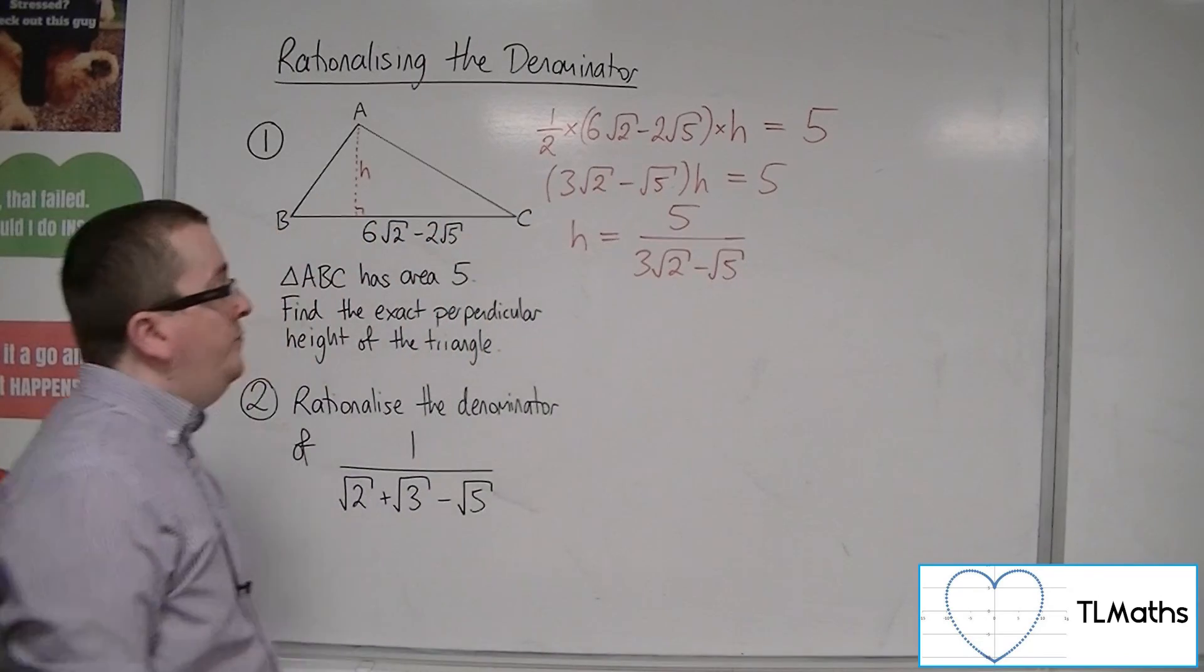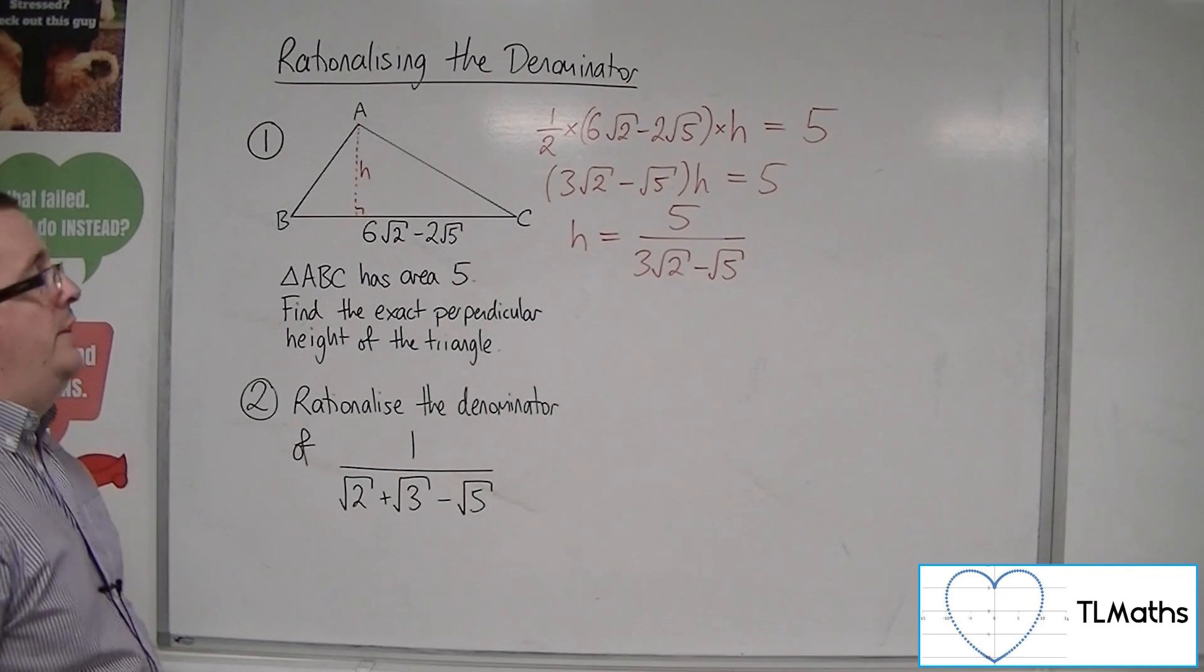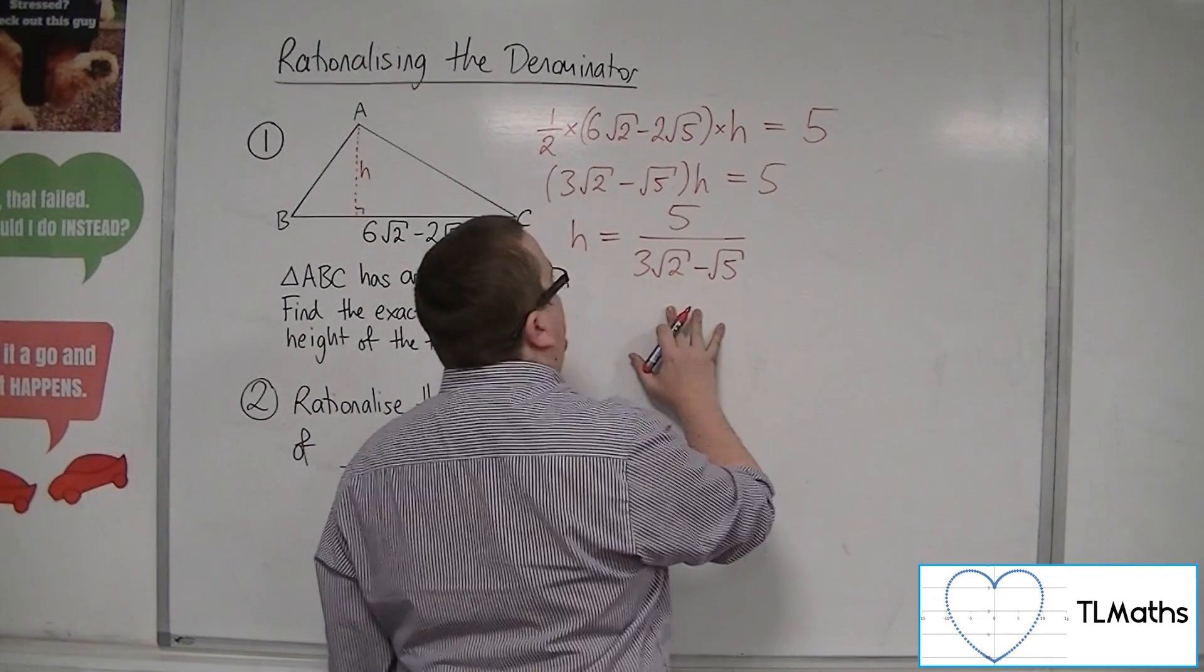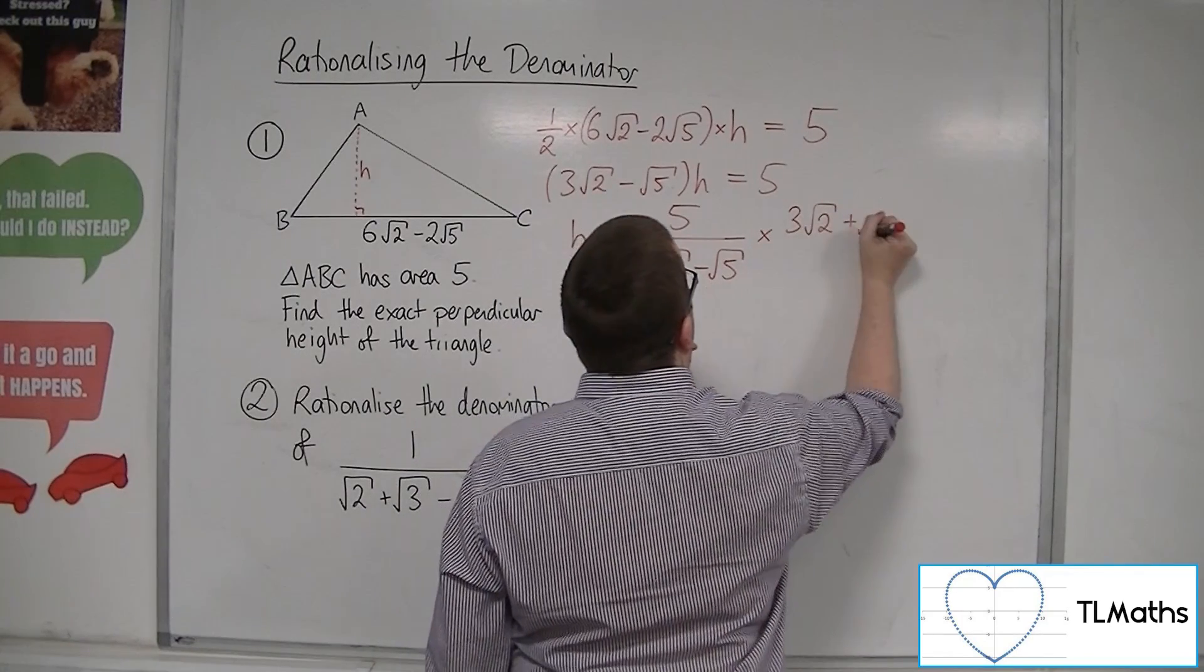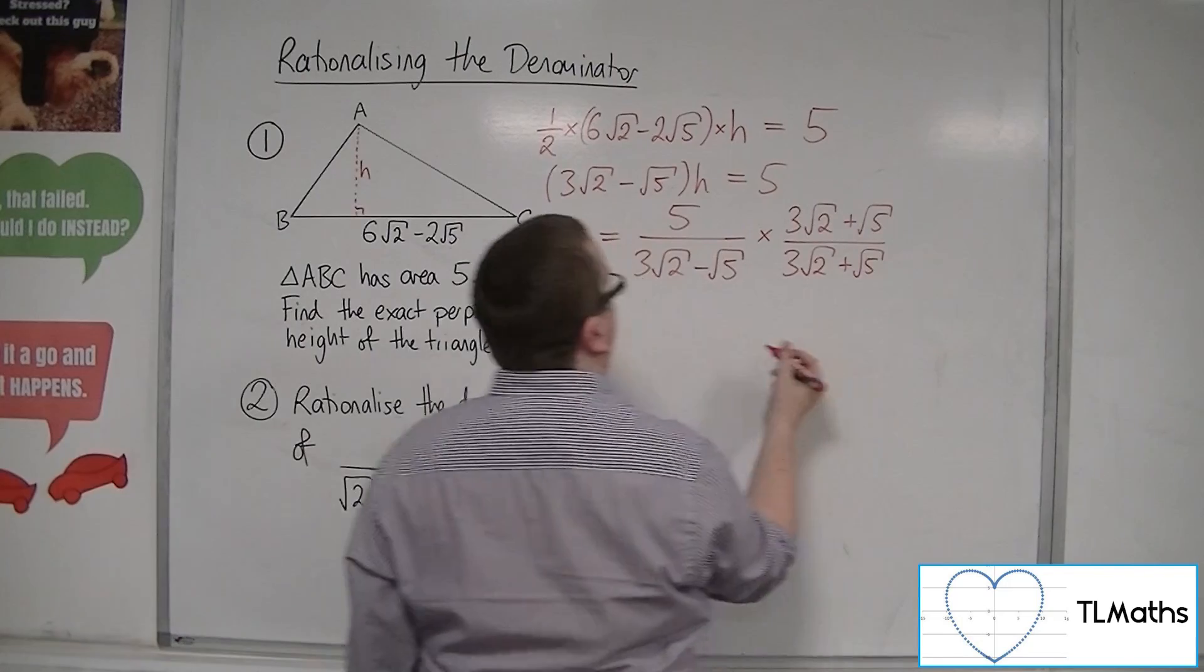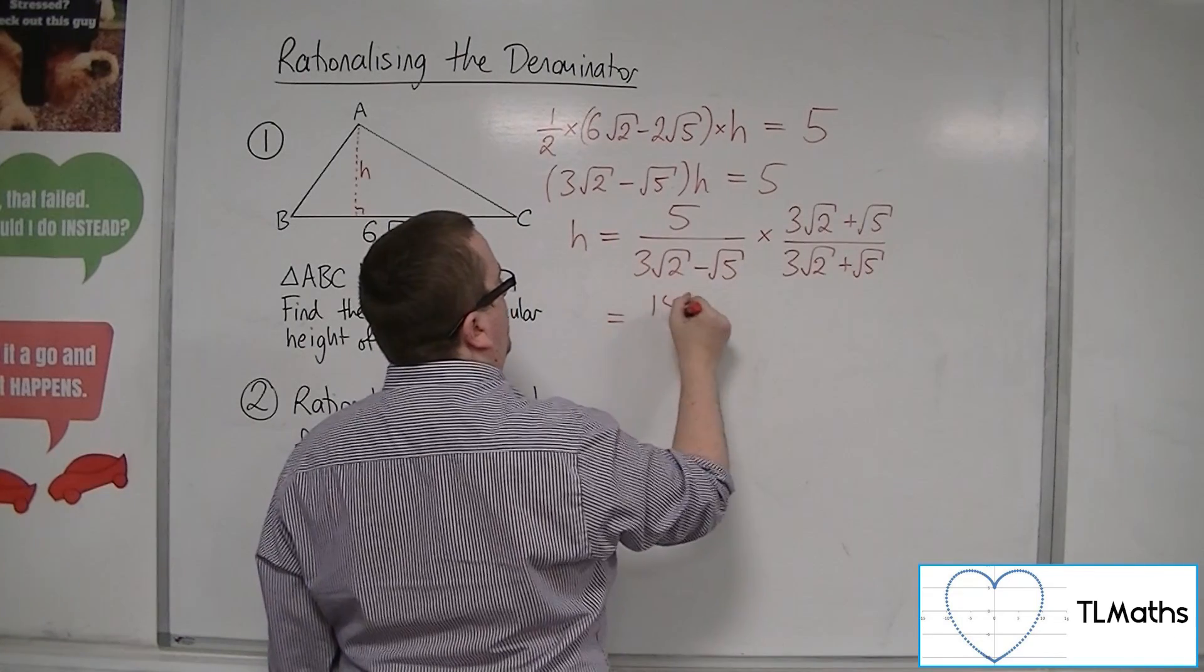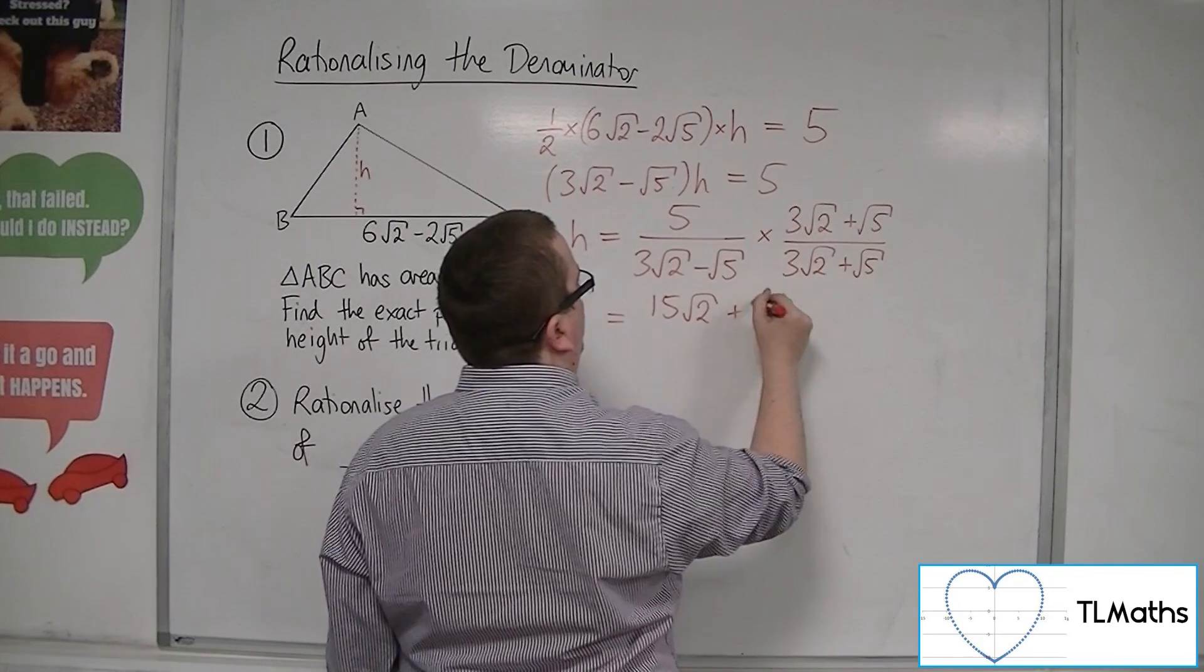Now we want to rationalize the denominator for that because it's quite messy as it stands. So we're going to multiply that top and bottom by 3 root 2 plus root 5 over 3 root 2 plus root 5. 5 times 3 root 2, so 15 root 2. And 5 times root 5, so 5 root 5.